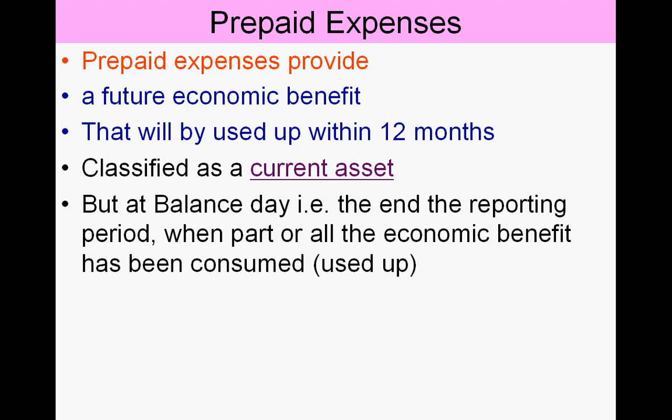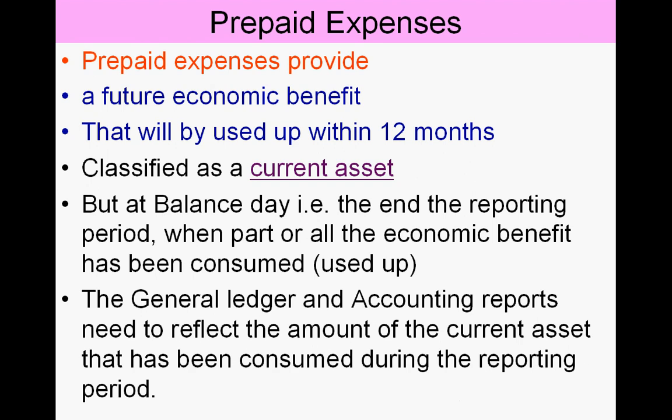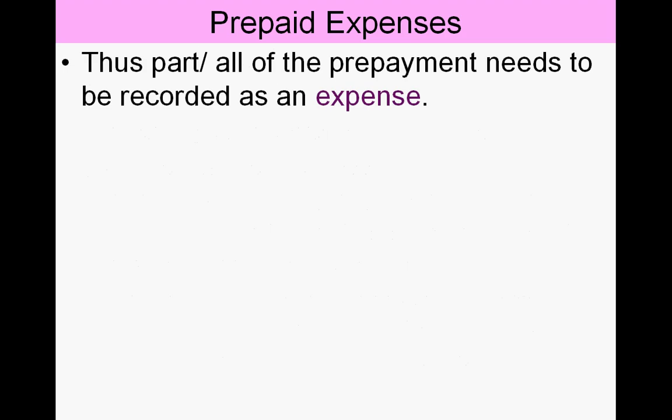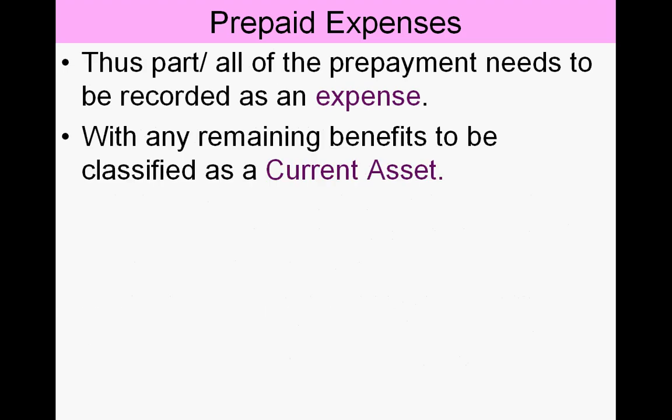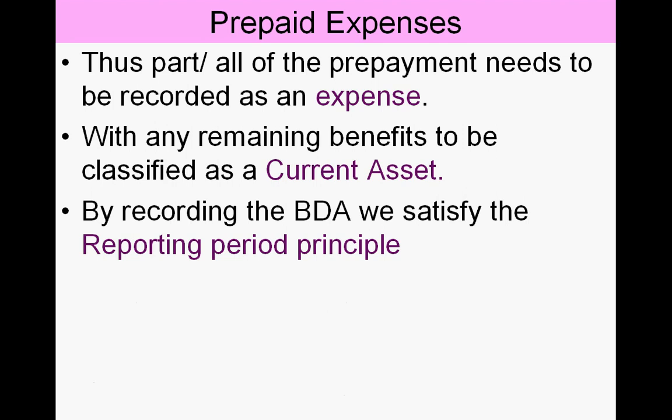When we get to balance day — the end of the reporting period — and part or all of the economic benefit has been consumed, we need to do a balance day adjustment so that our general ledger and consequential accounting reports reflect the value of the current asset consumed. We record the amount consumed as an expense, with the remainder staying as a current asset.